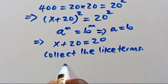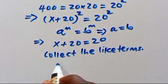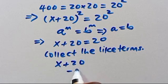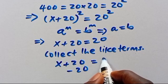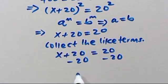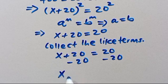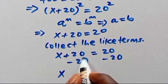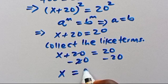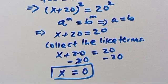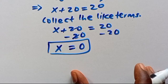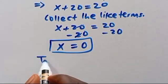Subtracting 20 from both sides: x+20-20 = 20-20. This gives us x = 0. So x = 0 is the solution. Let us now verify.